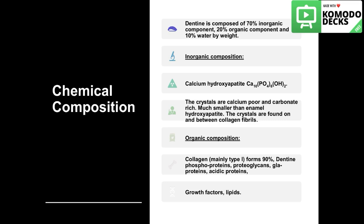The chemical composition of dentine: 70% inorganic component, 20% organic component, and 10% water by weight. The inorganic composition is calcium hydroxyapatite. The crystals are calcium-poor and carbonate-rich, much smaller than enamel hydroxyapatite crystals, and are found on and between collagen fibrils. The higher carbonate percentage relates to solubility — go back to the enamel lecture to recall what that means.